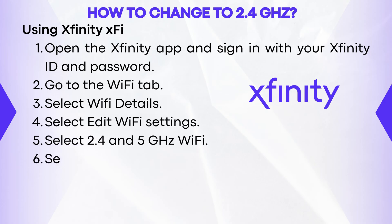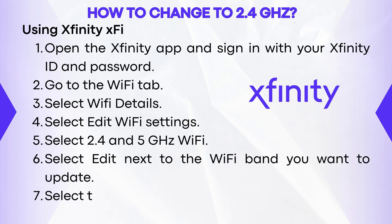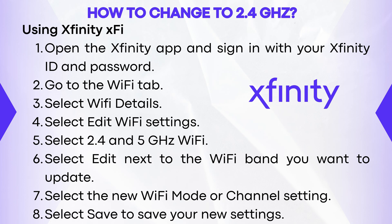Select 2.4 and 5 GHz Wi-Fi. Select Edit next to the Wi-Fi band you want to update. Select the new Wi-Fi mode or channel setting. Select Save to save your new settings.